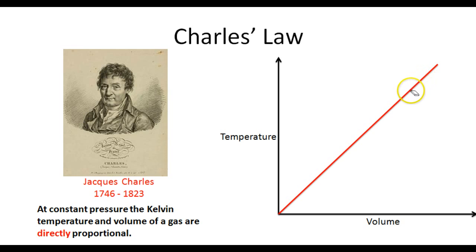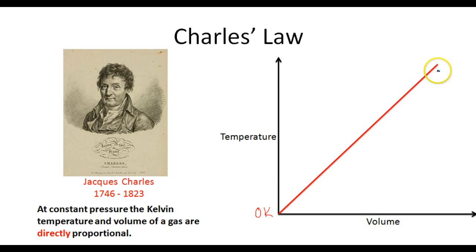Now if you take a look at this graph, if we cool down the temperature of a gas, the volume decreases more and more until we get to this point right here. This point on the graph would be known as zero Kelvin, or absolute zero. At absolute zero, a gas occupies zero volume. If you decrease the temperature of a gas down to zero K, the volume of that gas will occupy zero space. That's an important concept to understand.